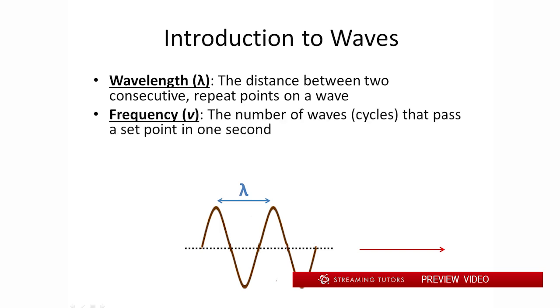Related to that is frequency. Frequency is just number of waves that pass through a given point per second. If I just made an arbitrary point right here, let's say, this wave travels towards the right here as this arrow indicates. Depending on how many wavelengths pass in a given amount of time, that will be our frequency.